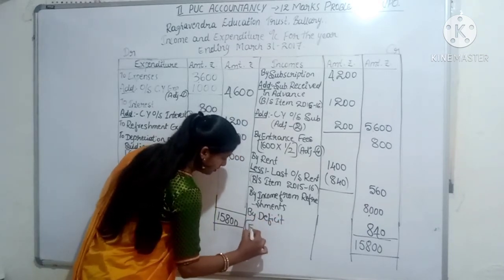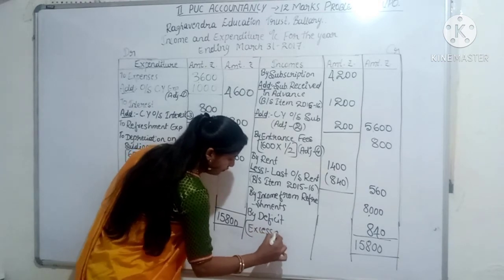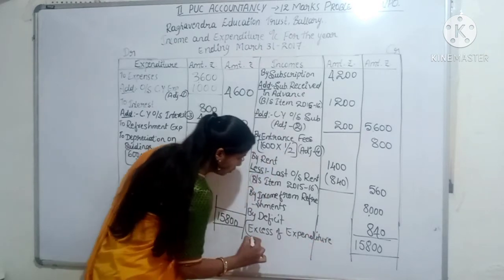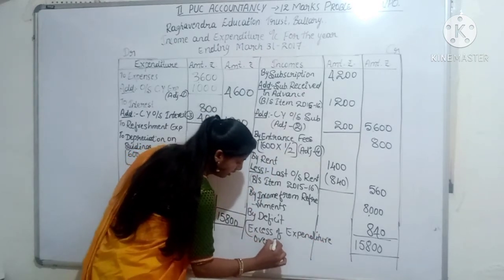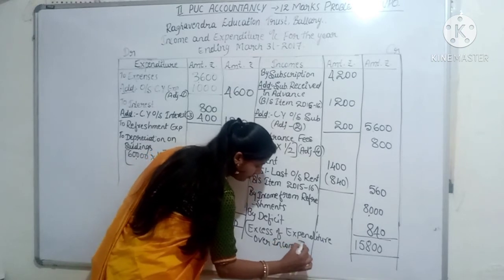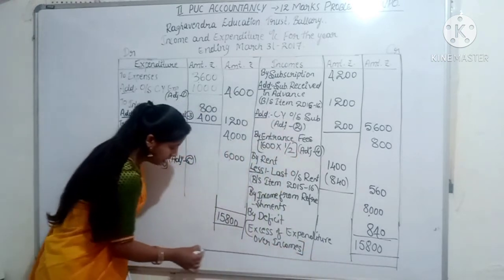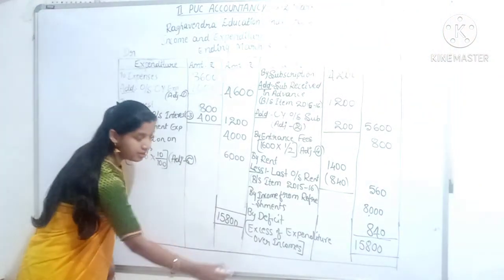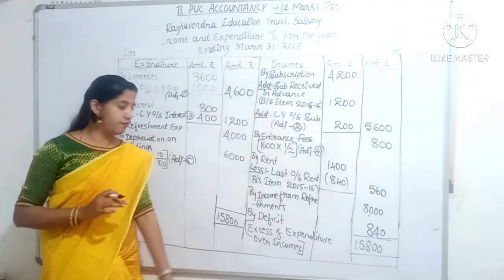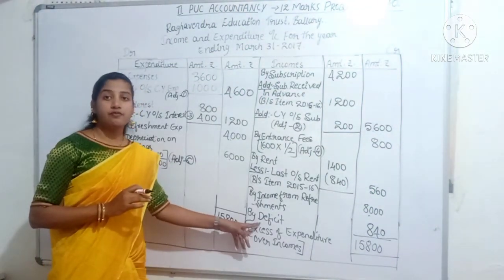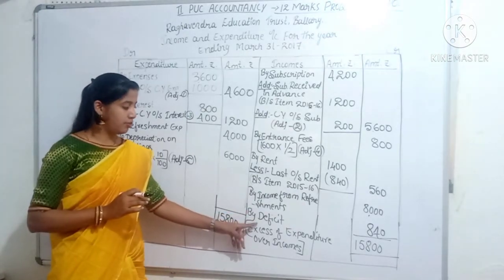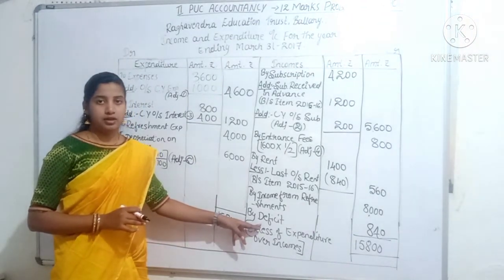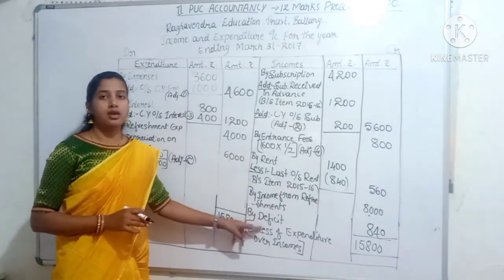The final answer: Rs. 840 is the deficit amount - excess of expenditure over income. Income side total minus expenditure side total gives Rs. 840. This is a loss, so it is transferred to the balance sheet under the head of capital fund and should be deducted from the capital fund.